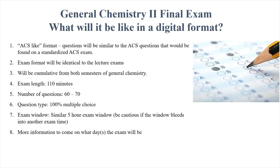We're not going to be giving you a formula sheet like with the ACS exam, so that might be something you'll want to put together. Now this is going to be open note, open book because you'll have all your stuff at home. Some good things to prepare: make sure you have a periodic table printed out and a good summary of the equations. You can actually look up what the ACS equation sheet looks like online and make a copy of that if you want.